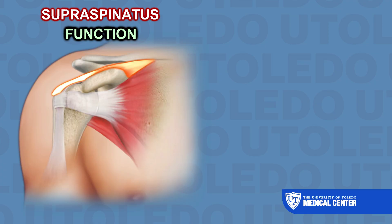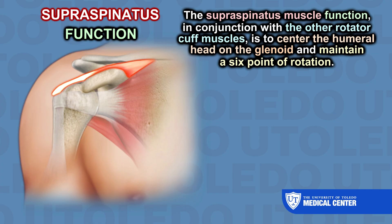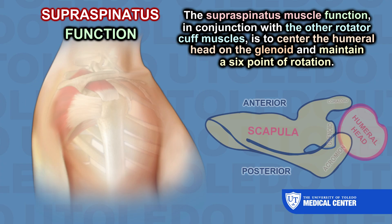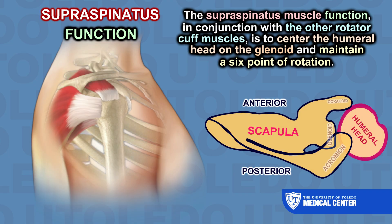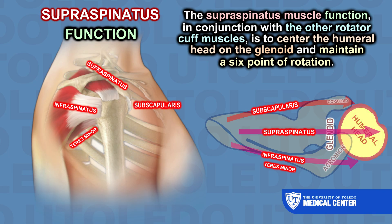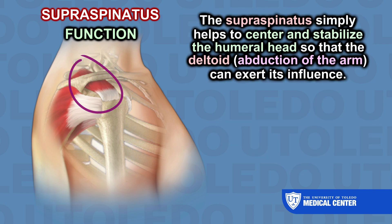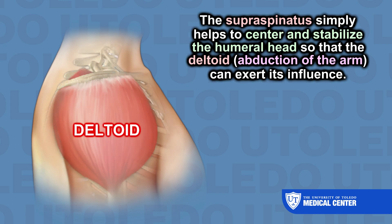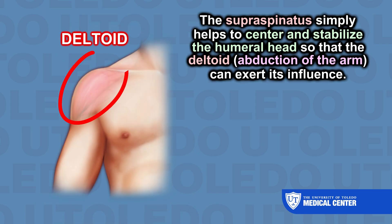Function: the supraspinatus functions in conjunction with the other rotator cuff muscles to center the humeral head on the glenoid and maintain a pivot point of rotation. The supraspinatus simply helps to center and stabilize the humeral head so that the deltoid can exert its influence, which is abduction of the arm.